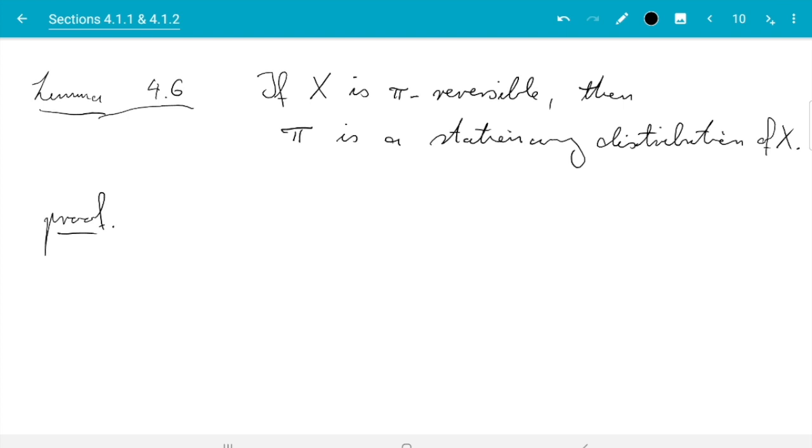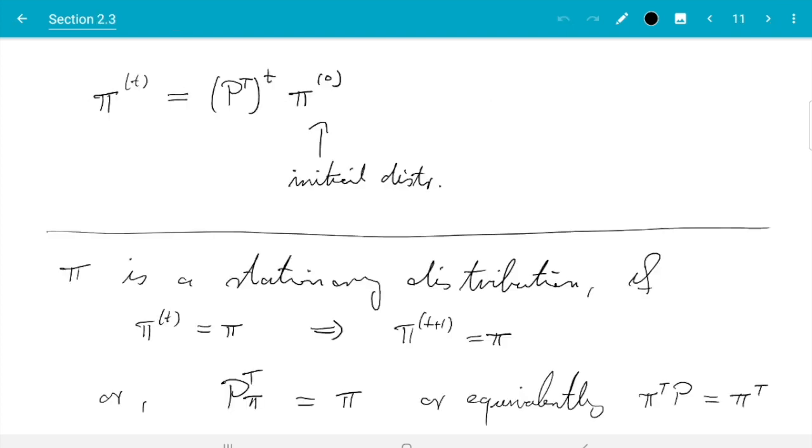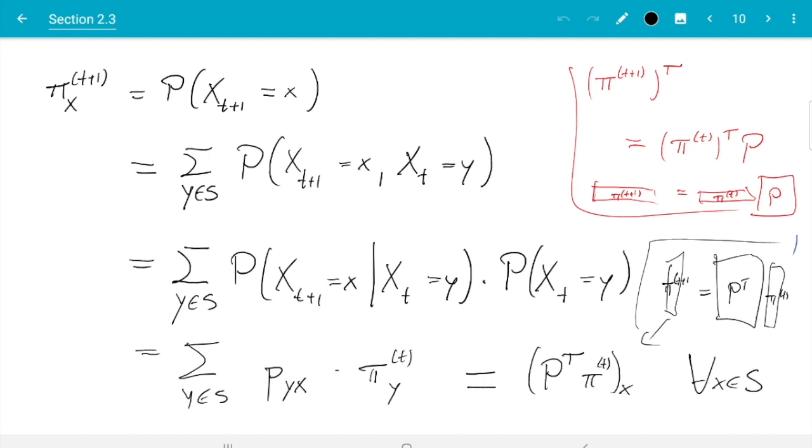So let me just write that here. If X satisfies the detailed balance condition with a certain probability vector pi, then sometimes one says X is pi reversible. That's just another way to say the same thing. The advantage of this notation is that we have a place where we can state what is pi. So the lemma says if X is pi reversible, then pi is a stationary distribution of X.